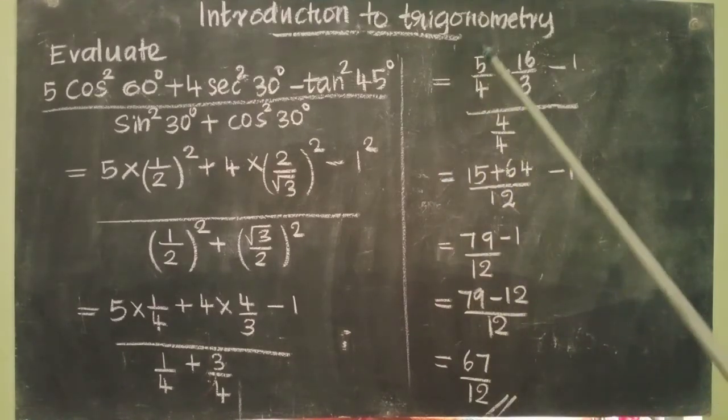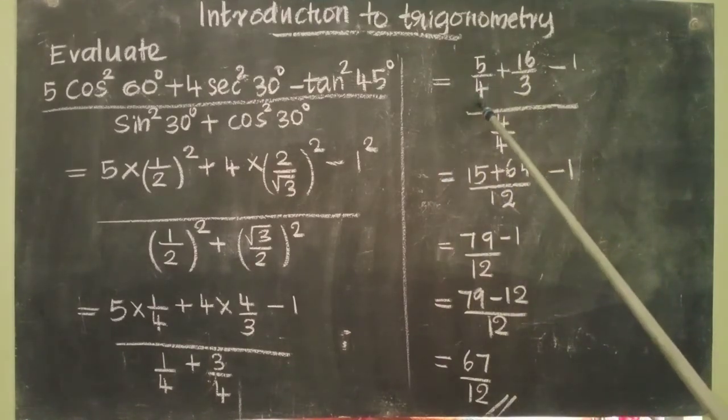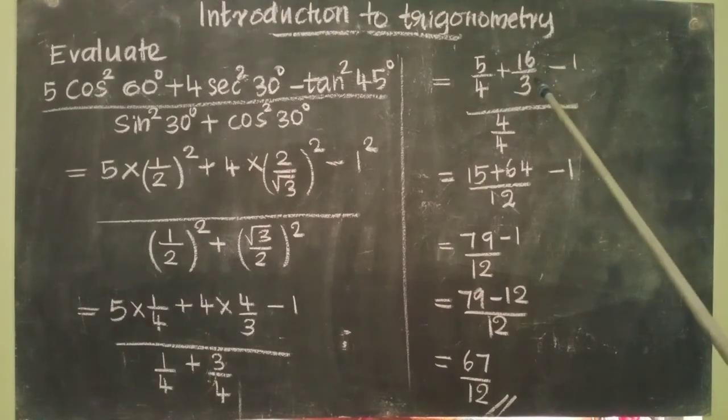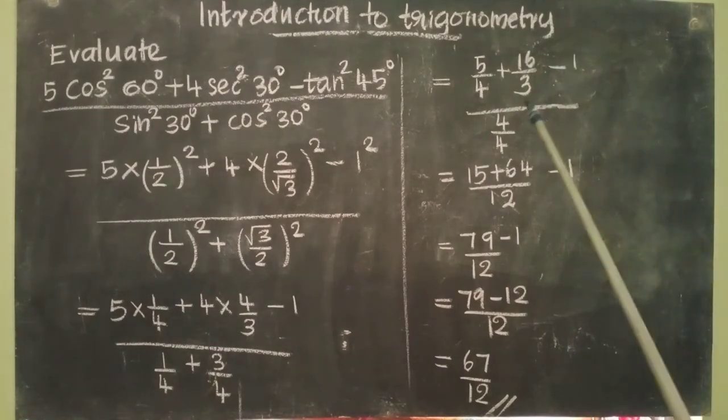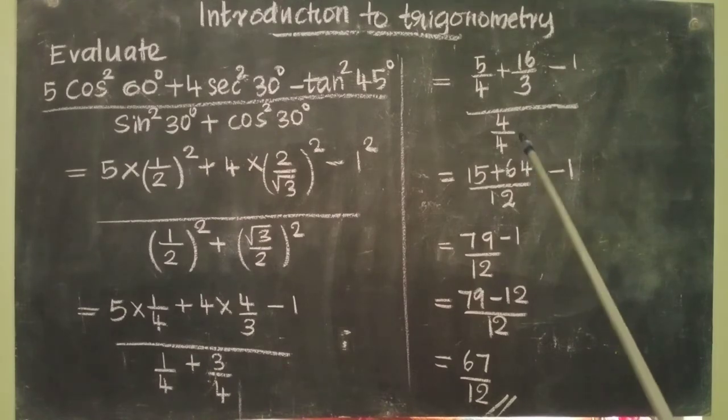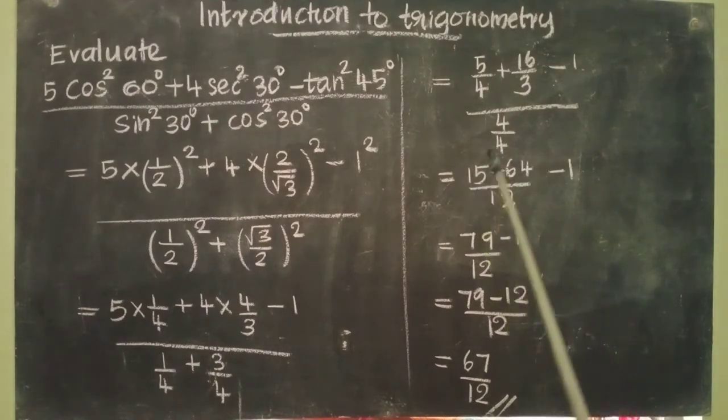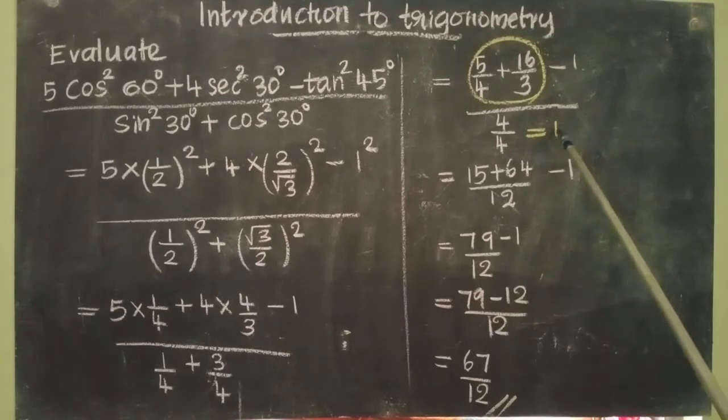So we get 5/4 + 16/3 - 1 divided by 4/4. What is 4/4? That equals 1, so the denominator becomes 1.